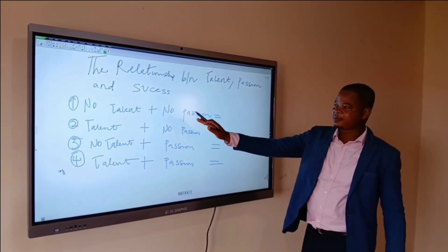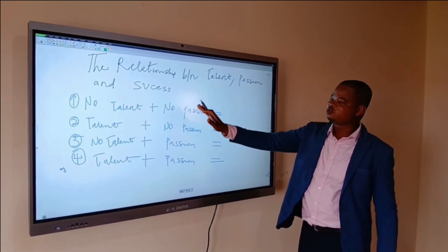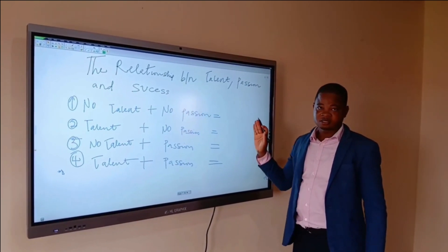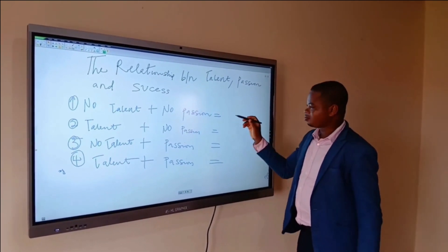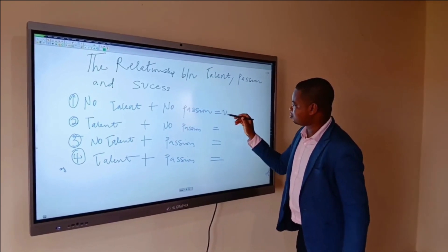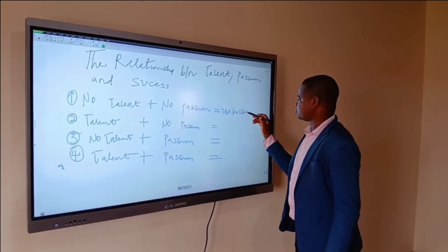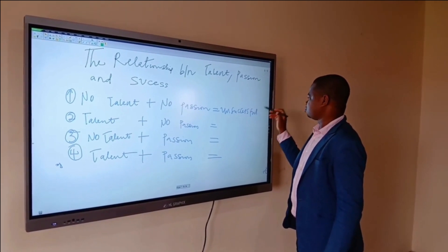So, the first category we are talking about is the person who has no talent and no passion. And that person is what we call an unsuccessful person.